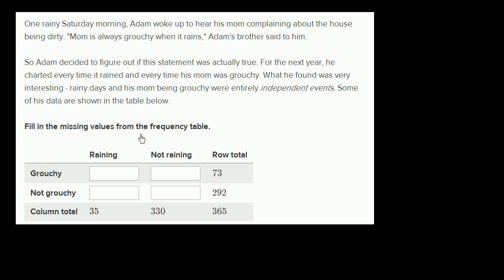Let's see, we have raining days, not raining days, and the total days that he kept data for. Then he tabulated on the raining day whether his mom was grouchy or not grouchy and on a not raining day whether his mom was grouchy or not grouchy. There was a total of 35 days it rained, 330 days that it didn't rain, and then 73 times his mom was grouchy and 292 times his mom was not grouchy.